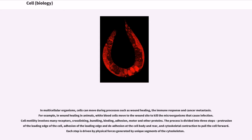The process is divided into three steps: protrusion of the leading edge of the cell, adhesion of the leading edge and de-adhesion of the cell body and rear, and cytoskeletal contraction to pull the cell forward. Each step is driven by physical forces generated by unique segments of the cytoskeleton.